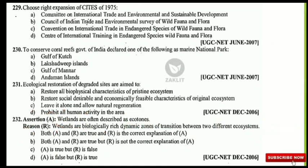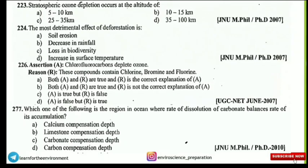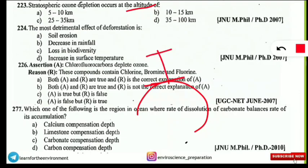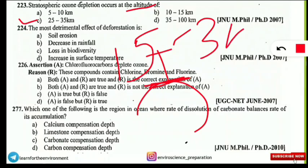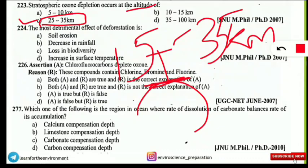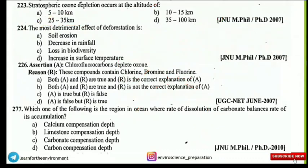The next question: stratospheric ozone depletion occurs at what altitude? The correct option is C — above 25 to 35 kilometers from the Earth's surface. The actual stratospheric ozone layer is at 15 to 35 km, so 25 to 35 km is the most appropriate option given here.